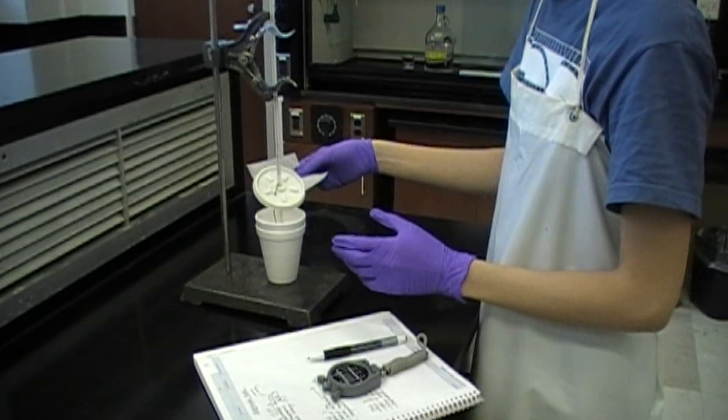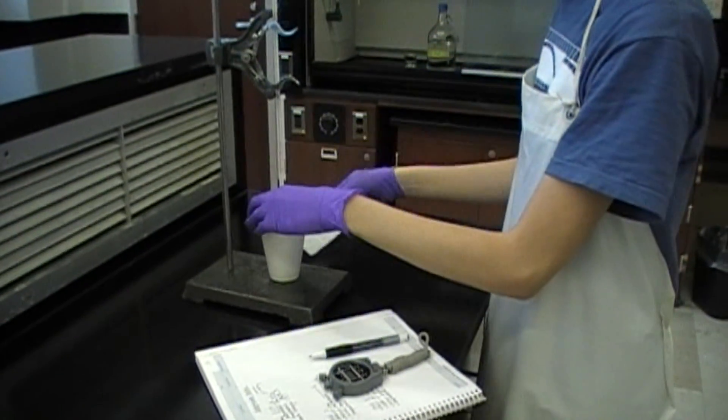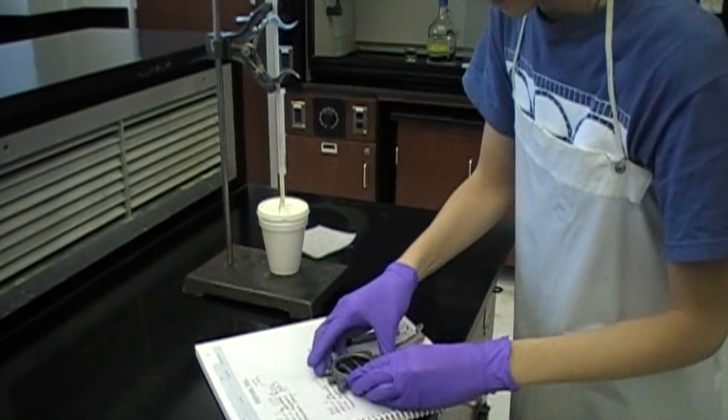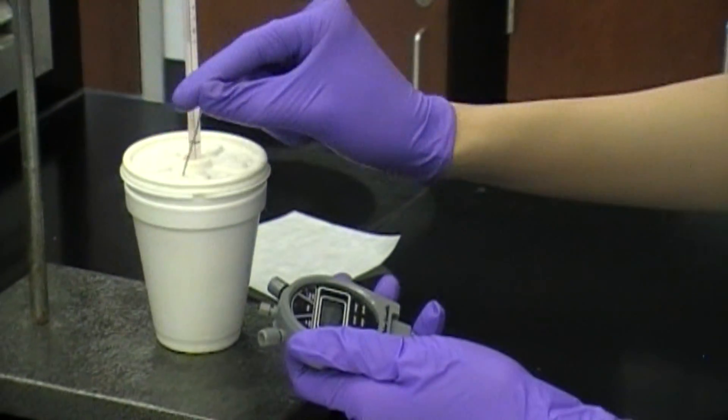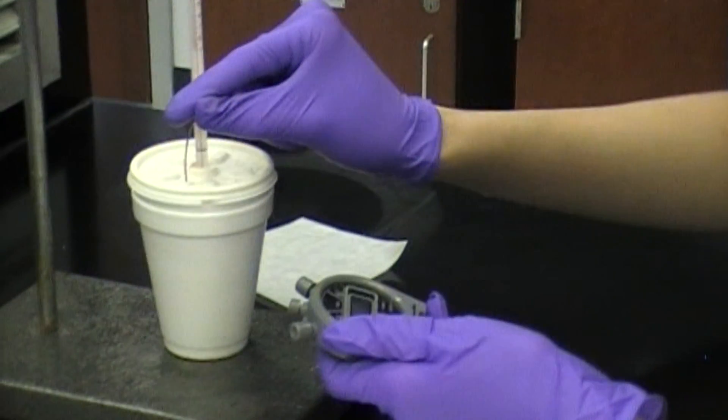Now we get to the exciting part. Add the magnesium turnings to your calorimeter, and immediately close the lid. Start the timer immediately, and also begin stirring your solution.